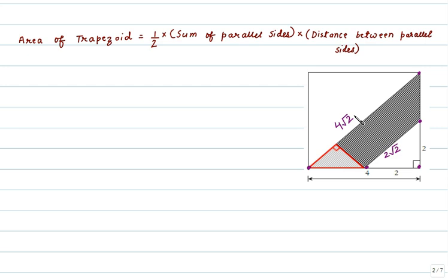So we have the parallel sides of the trapezoid as 2√2 and 4√2 and all we need now is the distance between the parallel sides in order to calculate the area of the trapezoid.